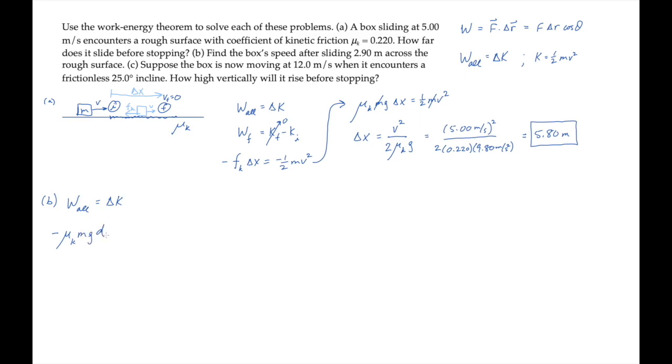In this case, we'll write the work done by kinetic friction as minus mu k mg times the distance d that it slides, similar to the expression above. And that equals the change in kinetic energy, half m v f squared minus half m times the initial speed squared.